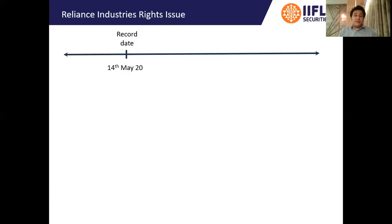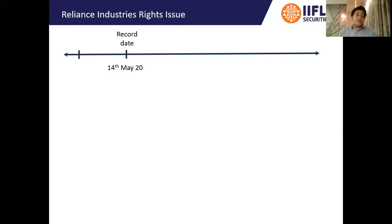If you want your name to reflect in the list of shareholders on 14th, you should buy the shares a couple of days before 14th, because in India there is a T+2 trading cycle — it takes two days for shares to come into your DMAT account from the point you buy them from the market. So shares bought on 12th or before would be in your account by 14th and eligible for the rights issue. Therefore the ex-rights date is 13th May, meaning shares bought on 13th and after are not entitled to the rights issue.